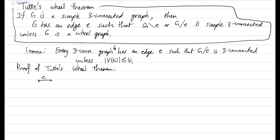So what's the problem? The problem is that the graph is no longer simple. Therefore we must have a triangle. So I can assume that the graph has a triangle.